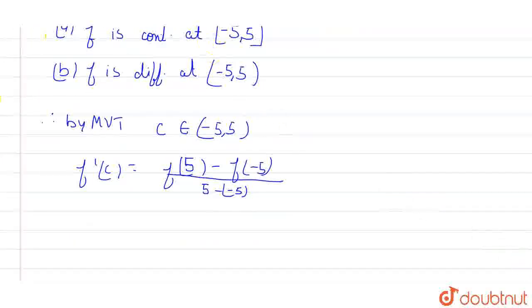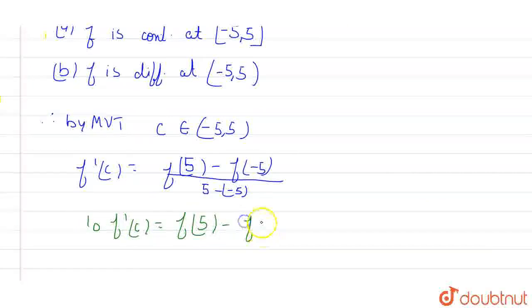So we can write it down as: 10f'(c) should always be equal to f(5) - f(-5).